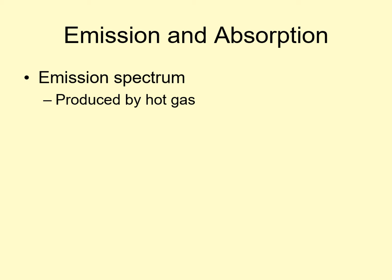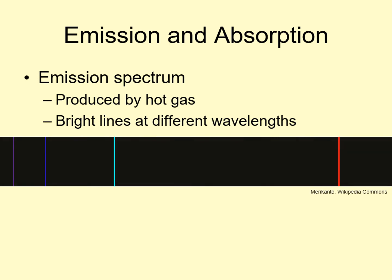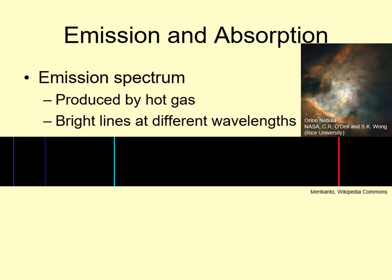The light it produces isn't a continuous rainbow. Instead, it's made up of a discrete set of bright colors called emission lines. There may be just a few lines, or the spectrum may look like a barcode, depending on what gas is emitting the light. When we look at a glowing nebula in the night sky, we're often seeing an emission spectrum.